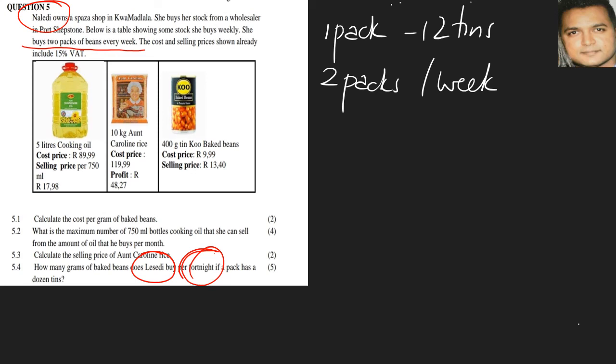So let's put this into mathematical sense. So we have 12 tins times twice a week, and times two weeks. So that would be 48 tins.